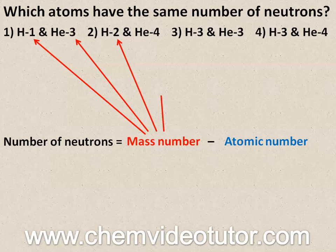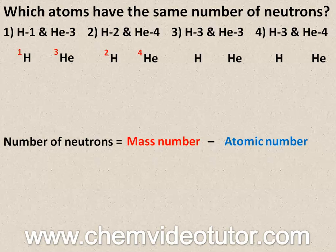All of the numbers written after the dashes represent the mass numbers for that element. Another way you may see this is by writing the symbol of the elements with the mass numbers above it and to the left.